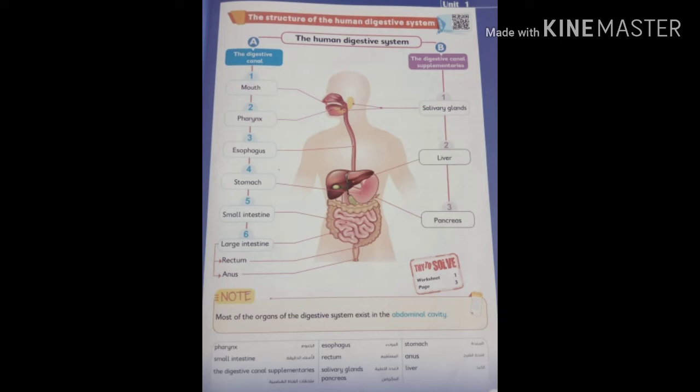Now we will know the structure of the digestive system. The digestive system has two parts: number one, digestive canal; number two, digestive canal supplementaries. The digestive canal consists of six organs.